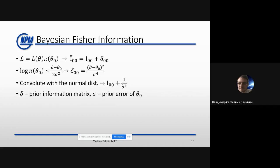For example, assuming that the distribution of this parameter is Gaussian, our Fisher information matrix will equal the original one plus an additive term, where sigma is the prior error of the parameter theta_0. This might help solve problems when correlations are large, and since we have this prior knowledge it might be easier to invert the matrix and to solve some problems with inversion.